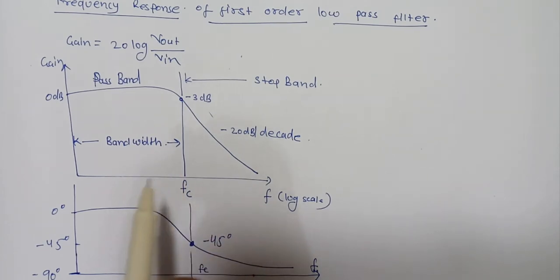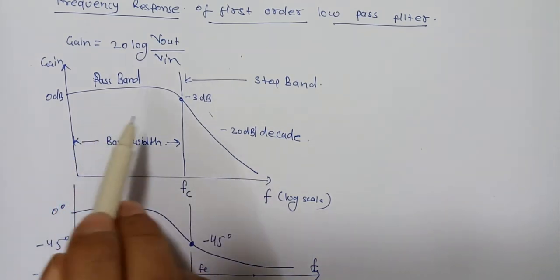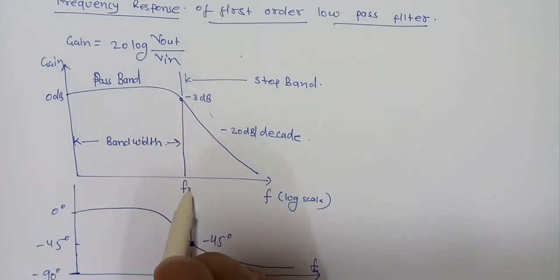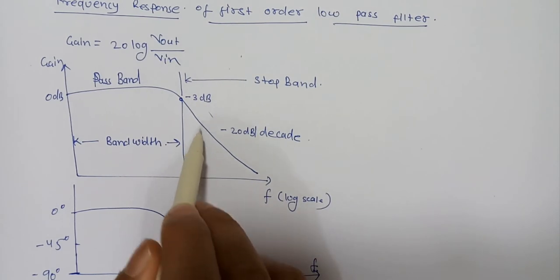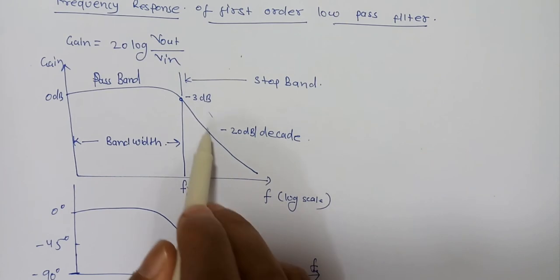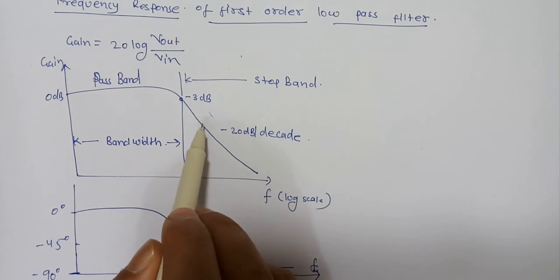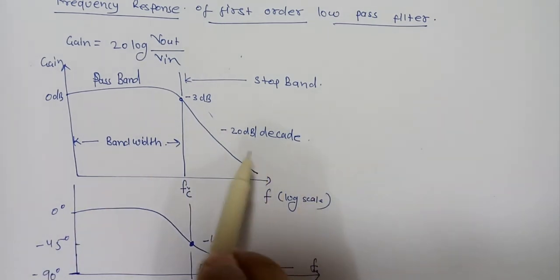This is because the reactance of the capacitor is high at low frequency and blocks any current flow through the capacitor. After this cutoff frequency Fc, the response of the circuit decreases to zero at a slope of -20 dB per decade or -6 dB per octave roll-off. Note that the angle of the slope of -20 dB per decade will always be the same; it doesn't depend on the value of the resistors or capacitors.